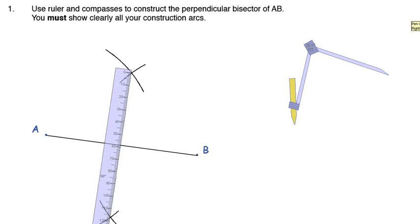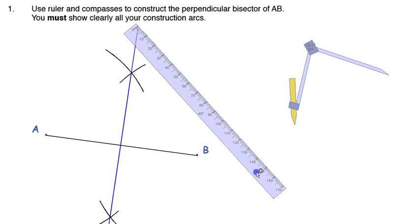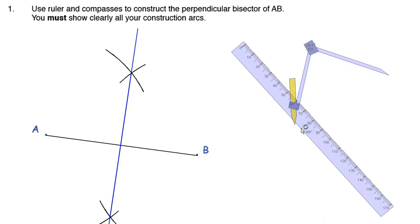And then just change my color. And I'm going to join those up. And actually, I'm just going to extend my line a little bit more in that way and a little bit more the other way. And then just move my ruler out of the way. That's my perpendicular bisector.